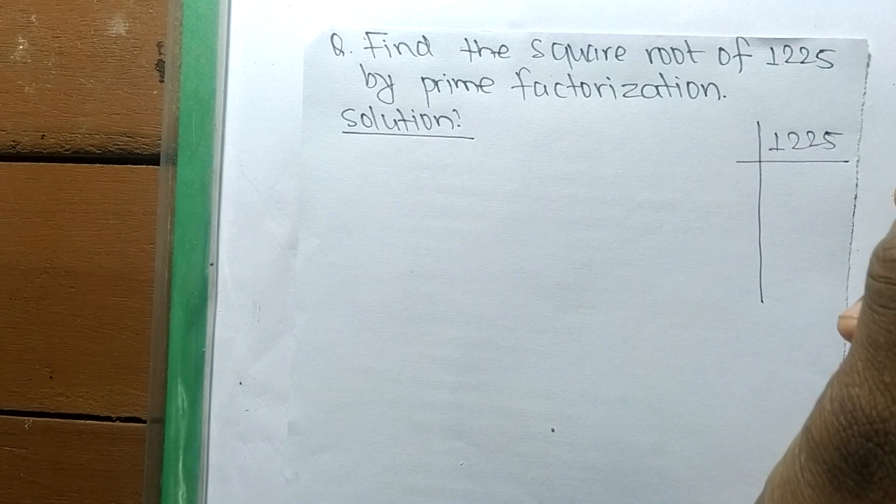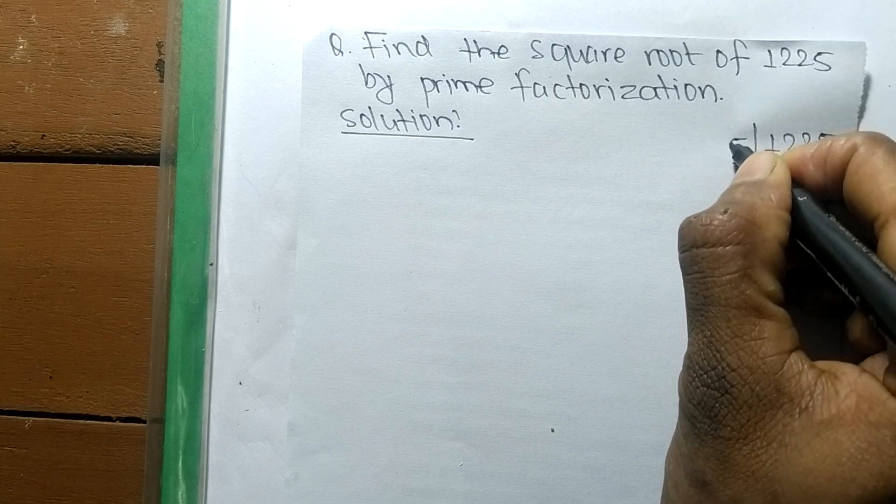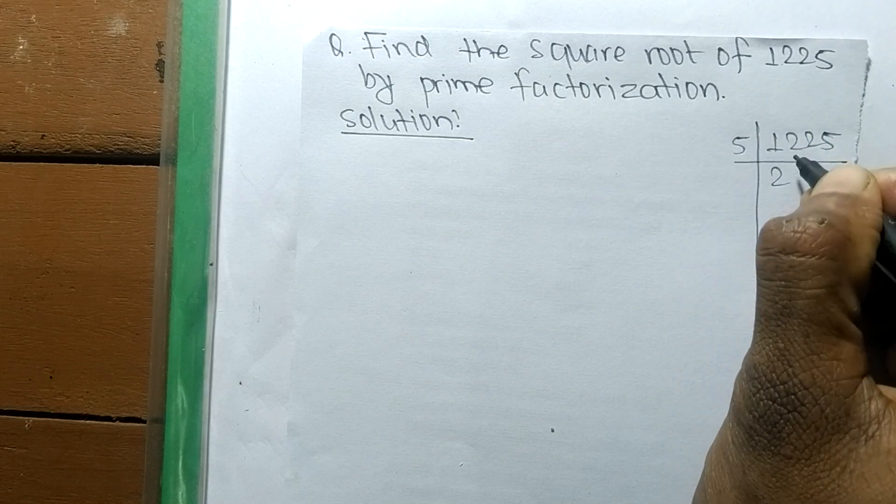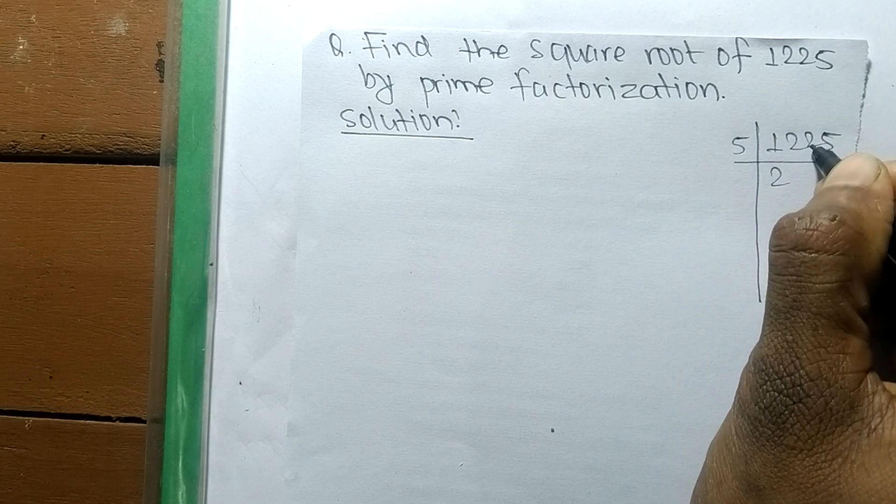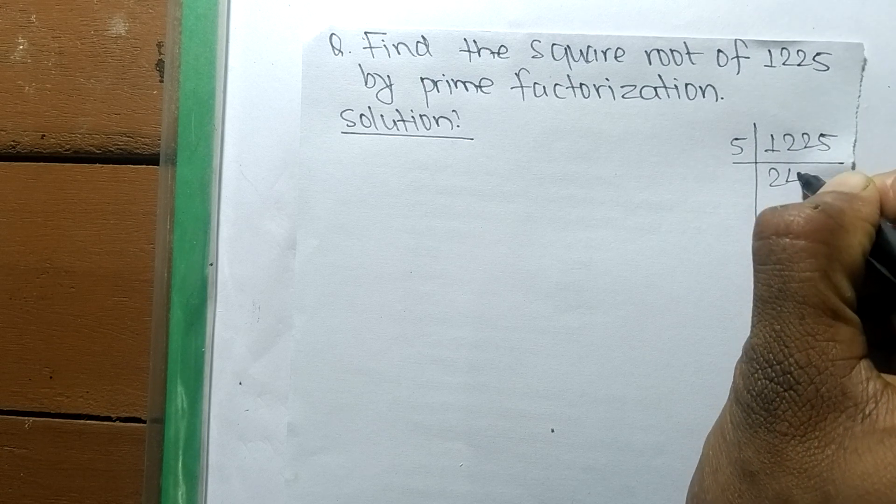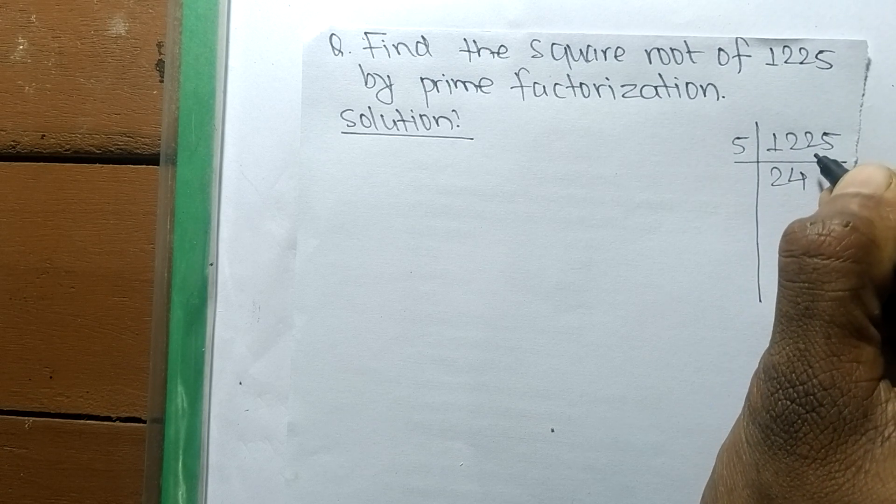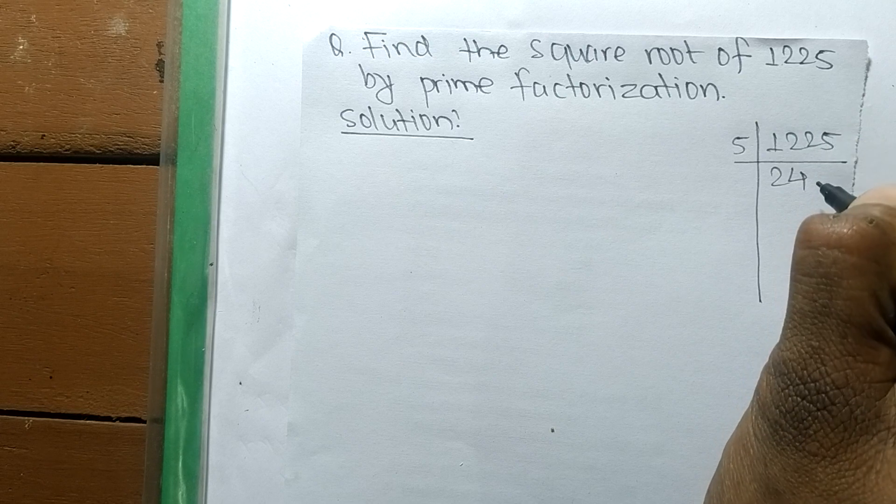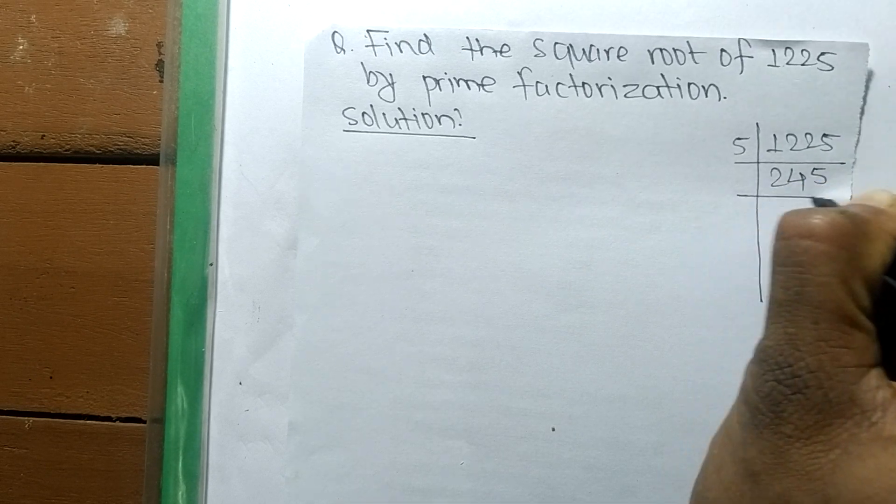So its prime factors: 5 divides into 1225, 5 times 2 is 10, remaining is 2. So 245, 5 times 4 is 20, remaining is 2. So 249, 5 times 5 is 25.